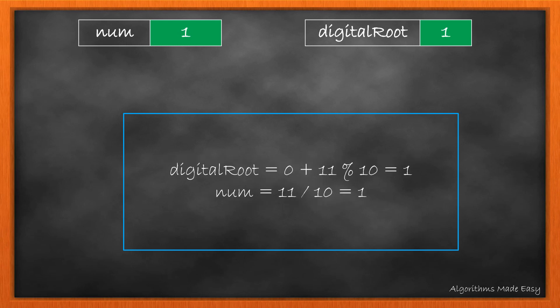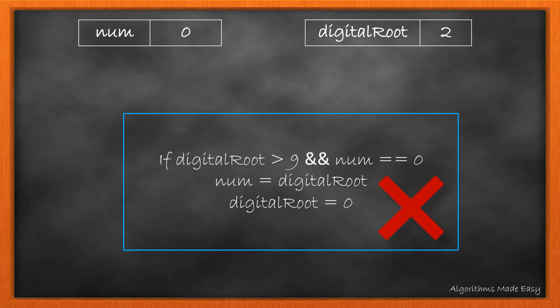We will find the sum of digits again which comes out to be 2. As 2 is not greater than 9 and the number has reduced to 0, all the looping conditions break and we return the digital root that is 2.